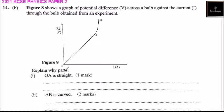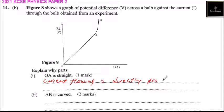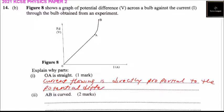Part OA is straight because the current flowing is directly proportional to the potential difference across the bulb. You get one mark for that.